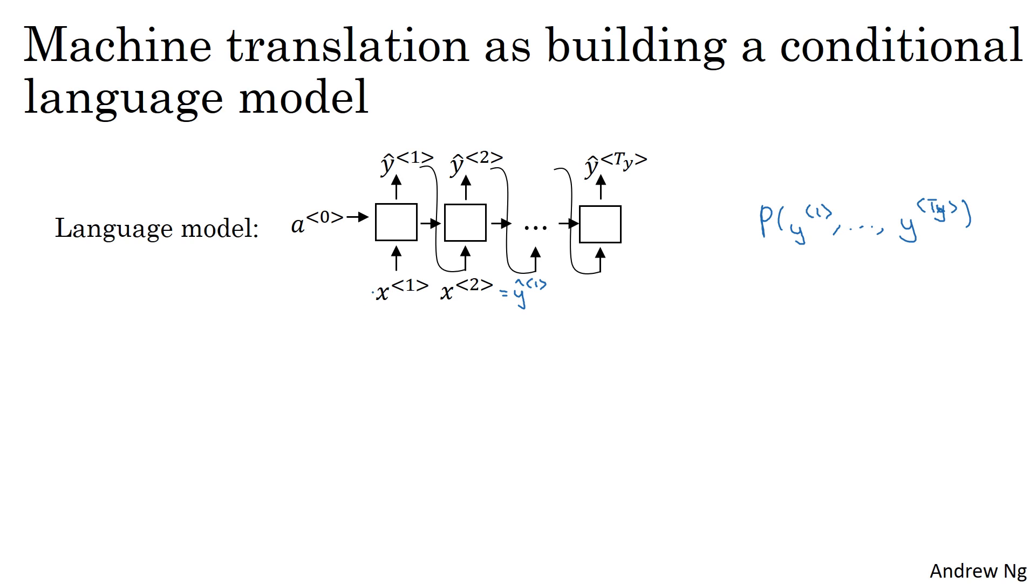But x1, x2, and so on weren't important. So just to clean this up for this slide, I'm going to just cross these out, where x1 could be the vector of all zeros, and x2, x3 are just the previous output you were generating. So that was the language model.